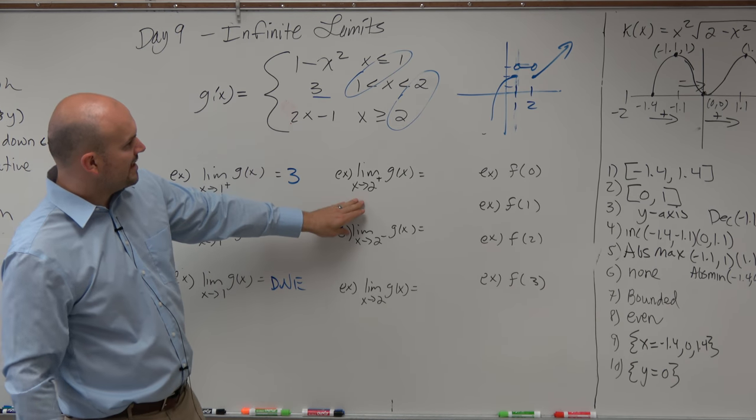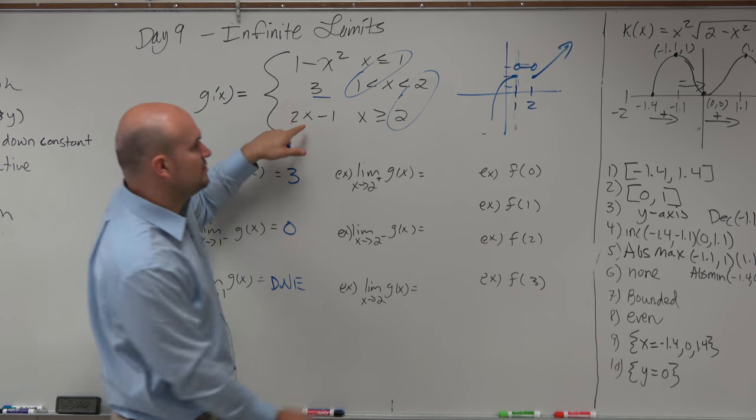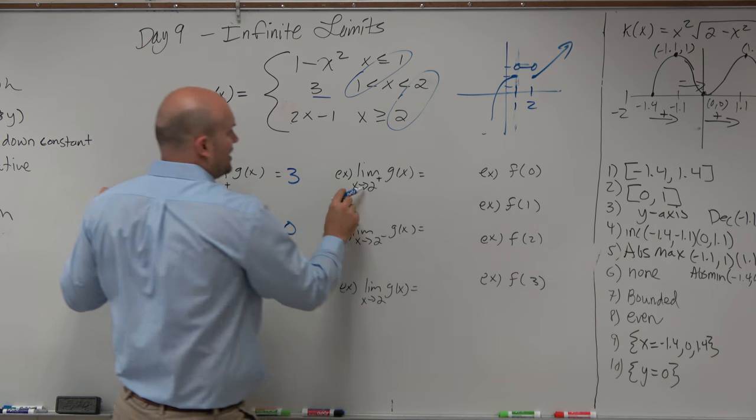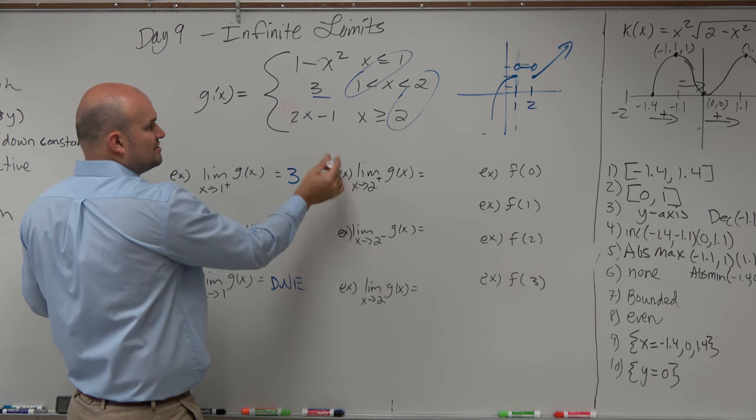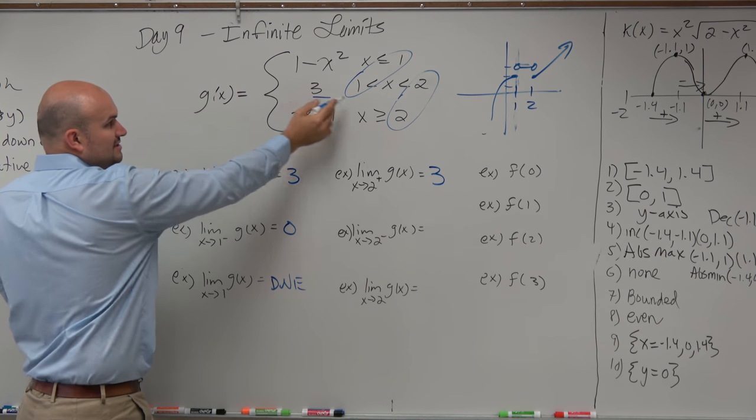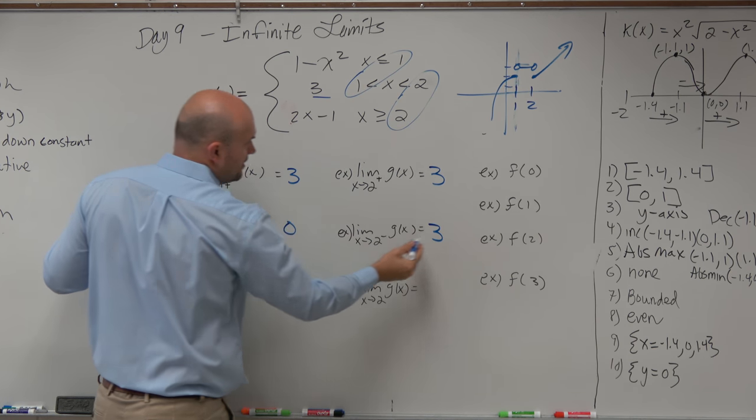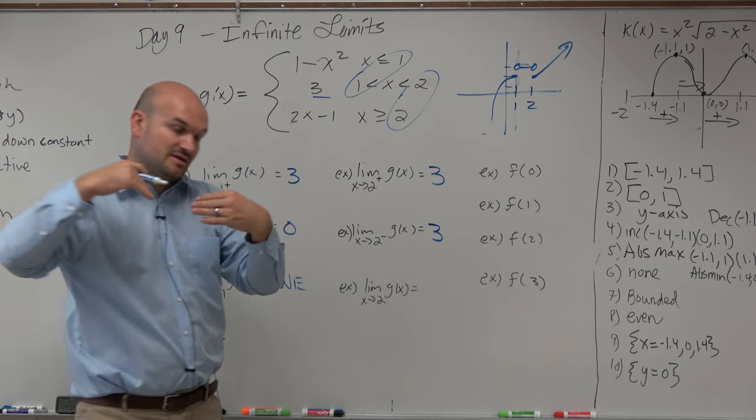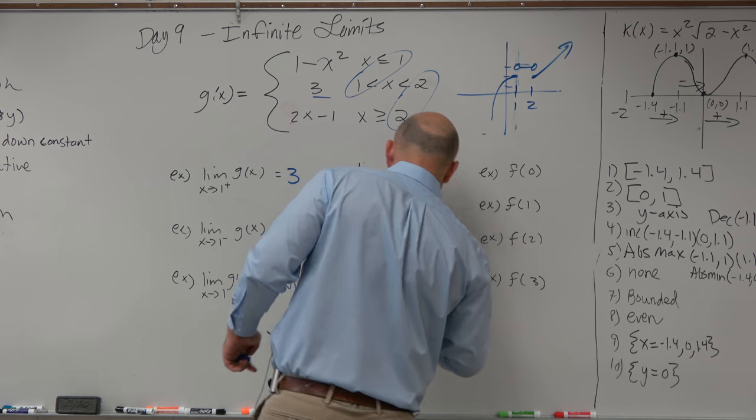What about 2 from the right? So that's going to be values that are greater than 2, which is this equation. So 2 from the right is going to be plugged in here, so that's going to be 3. 2 from the left is going to be values that are less than 2, which is 3. Obviously, if the left and right-hand limit are the same, then that's going to equal 3.